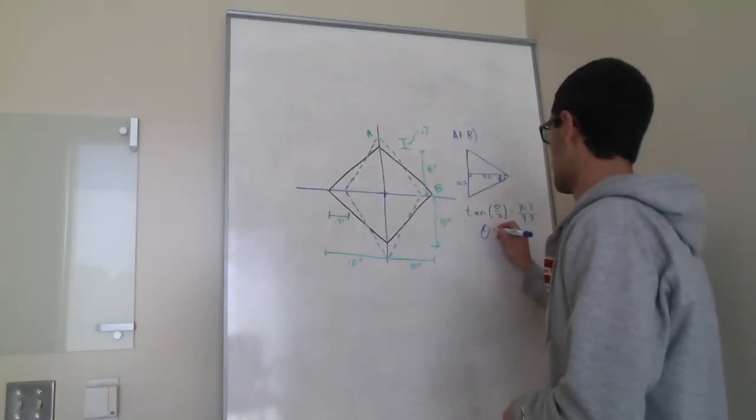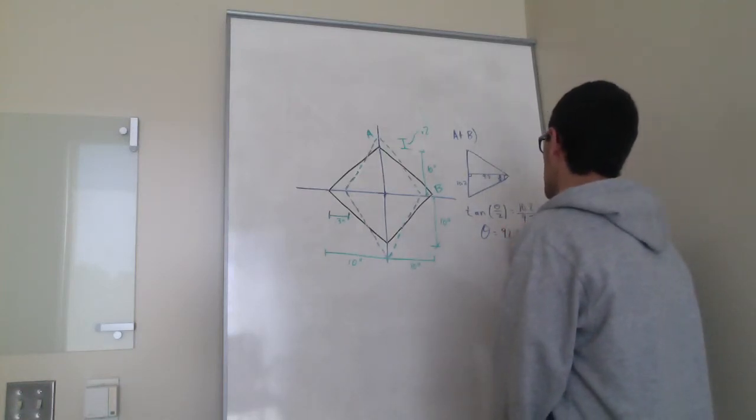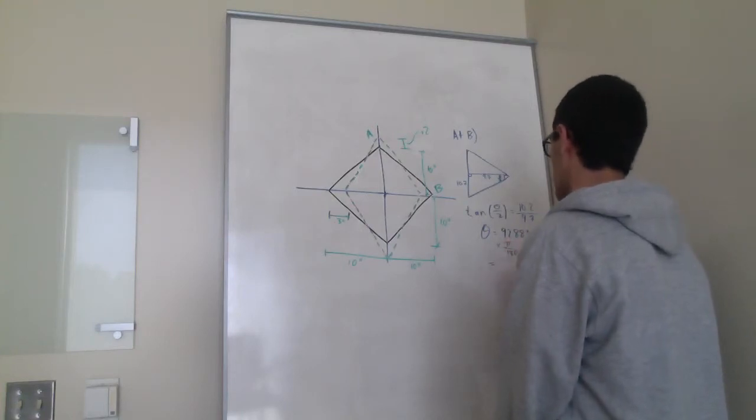So theta equals 92.8 degrees. Multiply that by pi over 180. We get 1.621 radians.